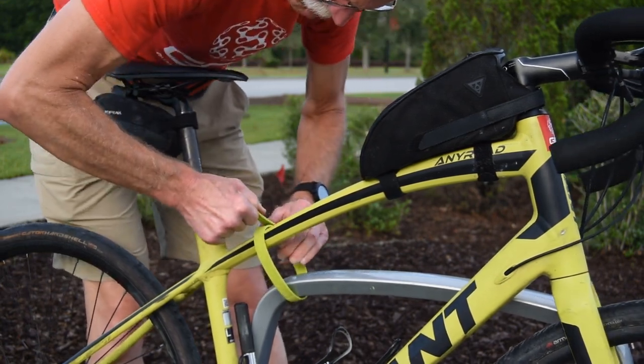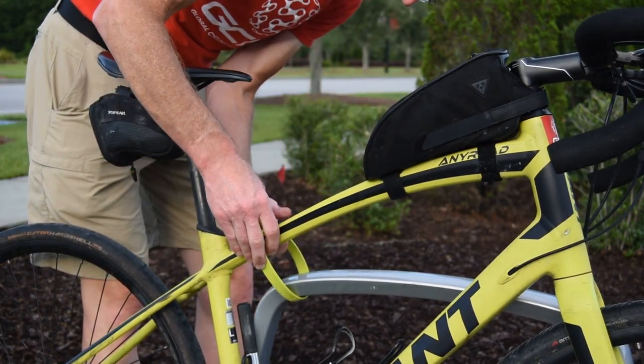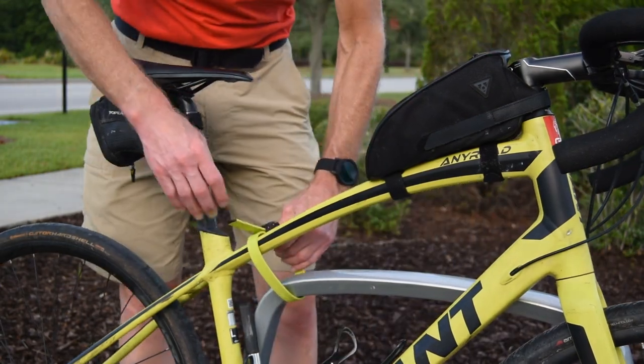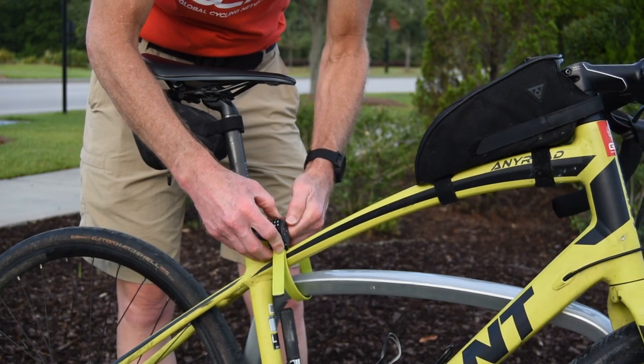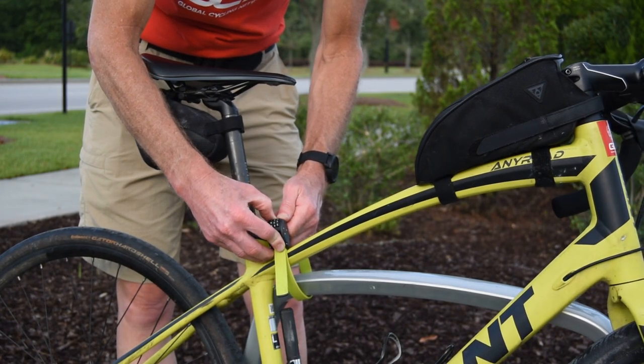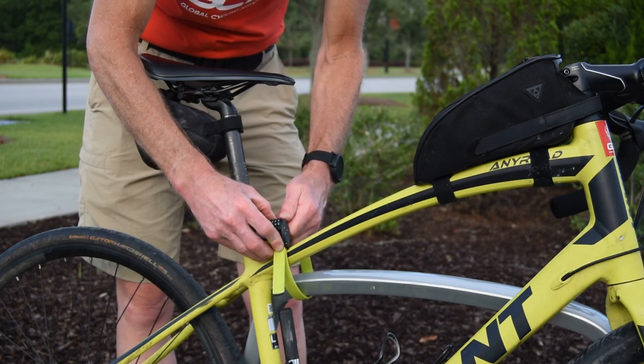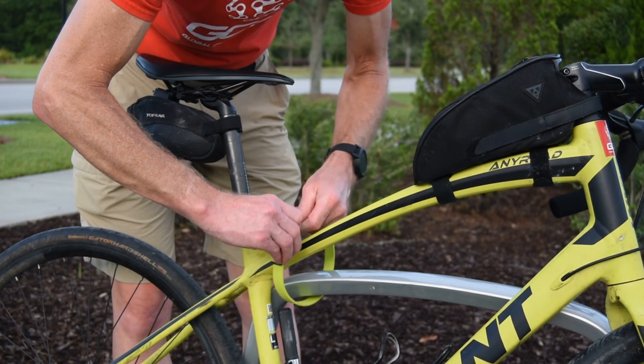This lock is made out of Kevlar steel so it's not super secure, but let's say you just wanted to stop off at a convenience store, hop in, get some Gatorade and get right back on your bike. This would do just fine.